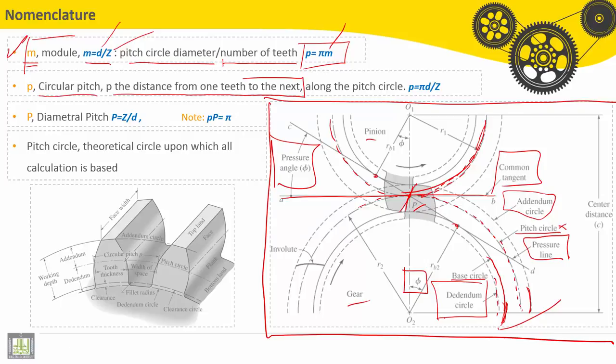It is called circular pitch. Along the pitch circle, this distance, P equals M times pi, then pi D over Z.